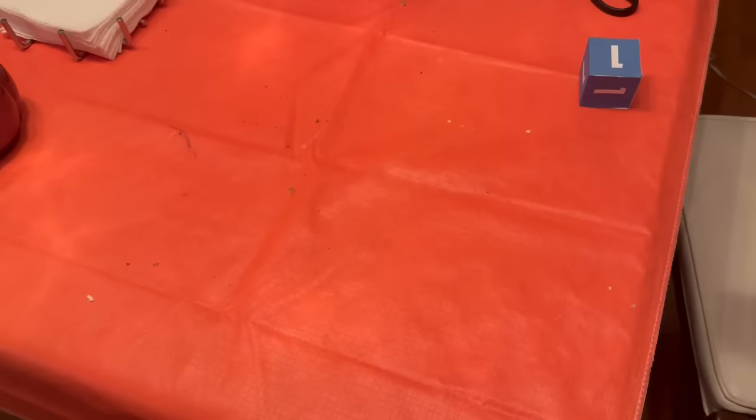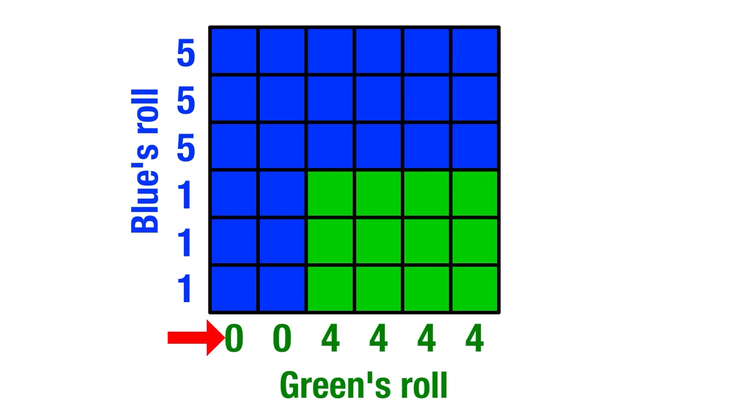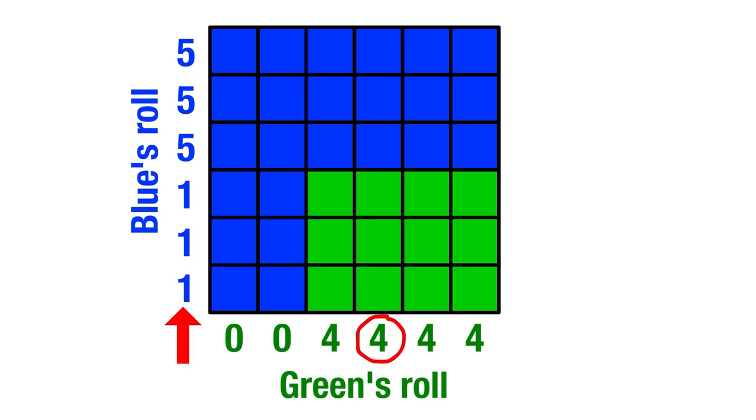Then, each of these 36 cells represents an equally likely outcome of the match, and we can label them either green or blue depending on who wins. For example, suppose green rolls a 4, then we'd go over horizontally to here. And suppose blue rolls a 5, then we'd go up vertically to here. And sure enough, that cell is colored blue because blue's 5 beats green's 4.